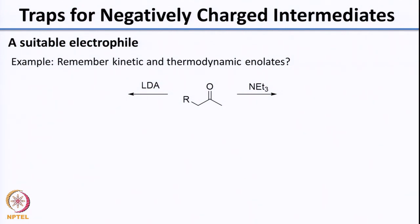In the next class, we will look at examples of how to trap different intermediates, starting with traps for negatively charged intermediates. Before that, I will leave you with a question: write the structure of the enolate formed based on the reagents given. In one case the reagent is LDA, a base; in the other it is triethylamine, also a base. Write the structure of both enolates - remembering this reaction is done at low temperature. Please write the structures and I will see you in the next lecture. Thank you.